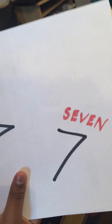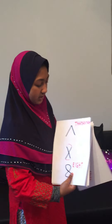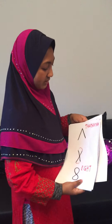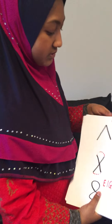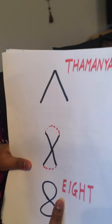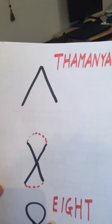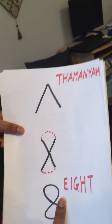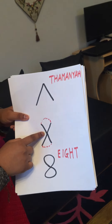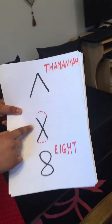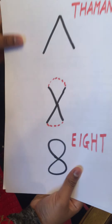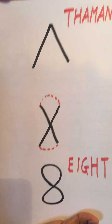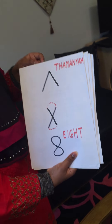Number eight in Arabic looks like an upside-down V, or an upside-down number seven in Arabic. They just joined the points, added some curves at the bottom and top, and it became the eight we have now.